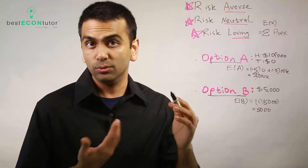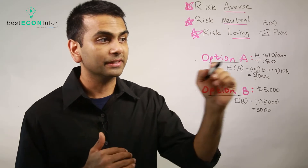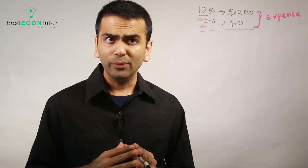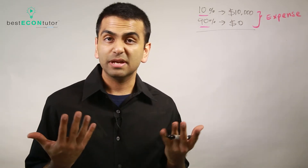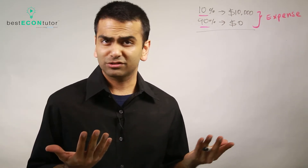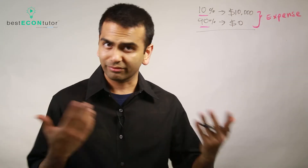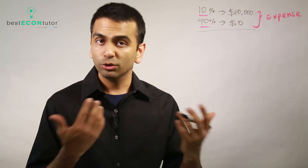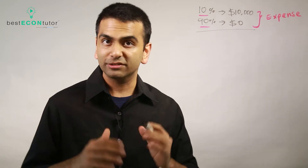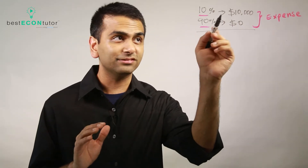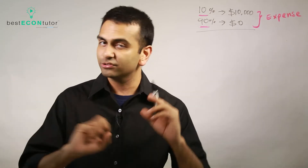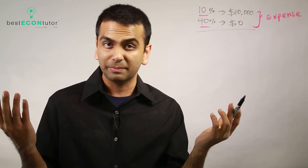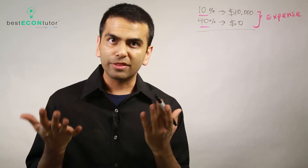A risk loving person might say, who cares about the $5,000 — I might as well try to get the $10,000, and they'd pick option A. But if we switch the numbers — say the coin flip was $100,000 versus $0 — then even a risk averse person might choose option A since it has a much higher expected value of $50,000. That doesn't make them risk loving; they just picked the one with the higher expected value.